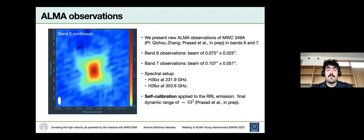For this work, we have new ALMA data that will be presented in a paper by Passat et al. We have band 6 and band 7 observations and the spectral setup has been designed to cover the emission from the H30 alpha and H26 alpha radio recombination lines. Also the self-calibration has been applied to the data to reach a dynamic range of around 1,000. You can see here in the ALMA band 6 continuum that the bipolar shape that was seen in the VLA images is also obtained with ALMA.